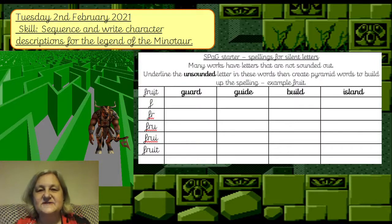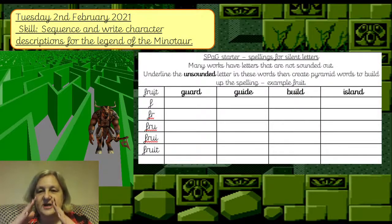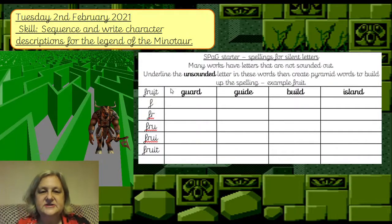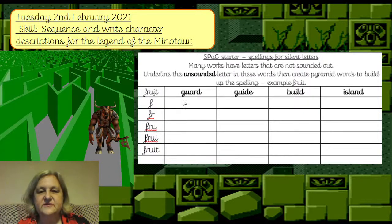Silent letters are letters that you don't sound out. What I would like you to do is create a pyramid for those spellings. Here is an example with the word 'fruit' — the letter that's not sounded out is the I. You start with the first letter, then add the second, then the third, then the fourth, and finally the last.